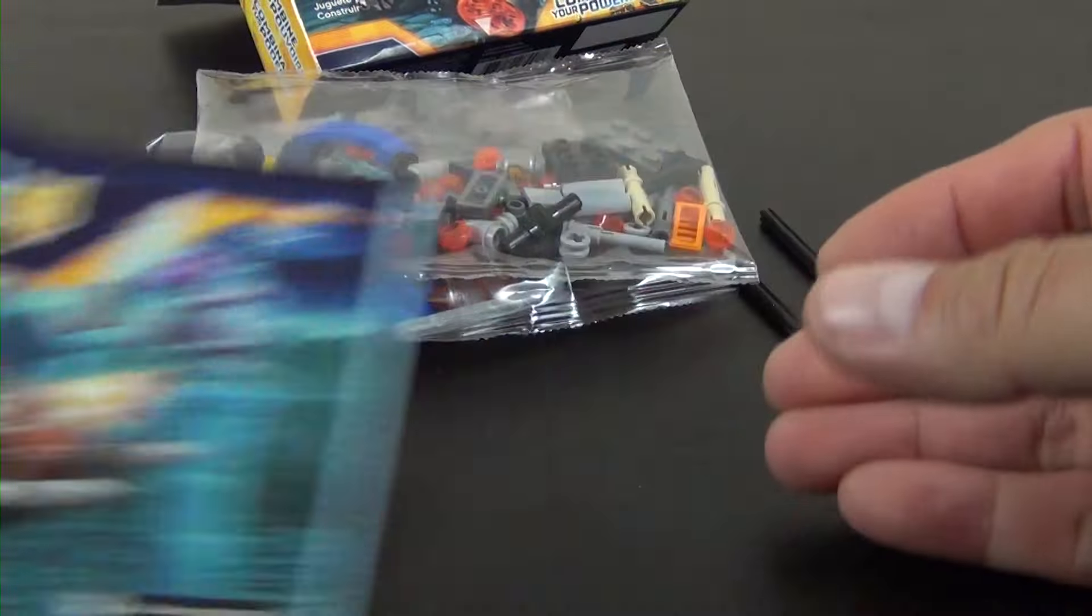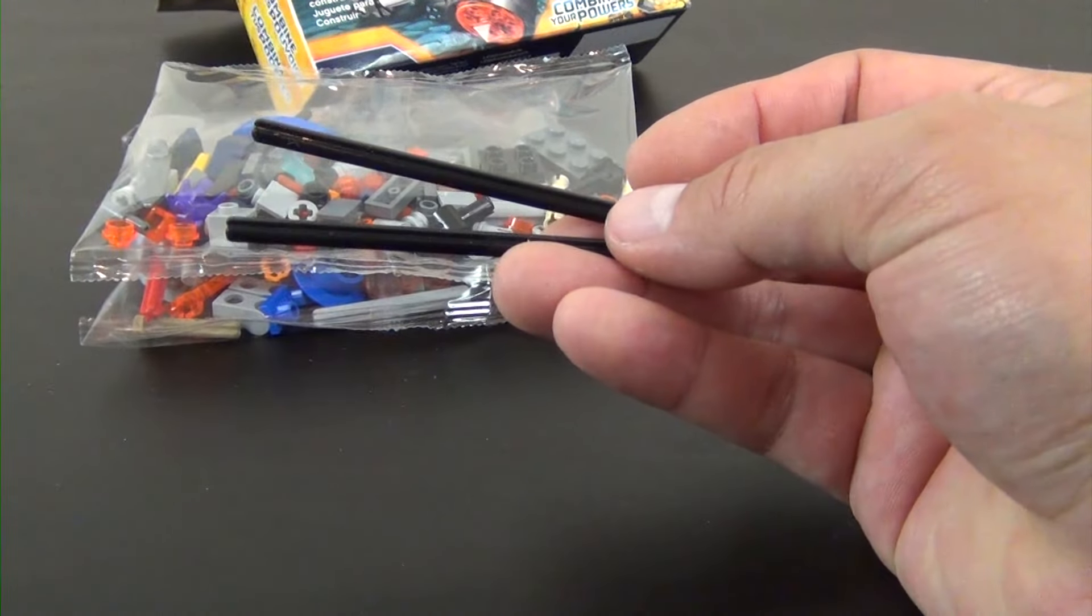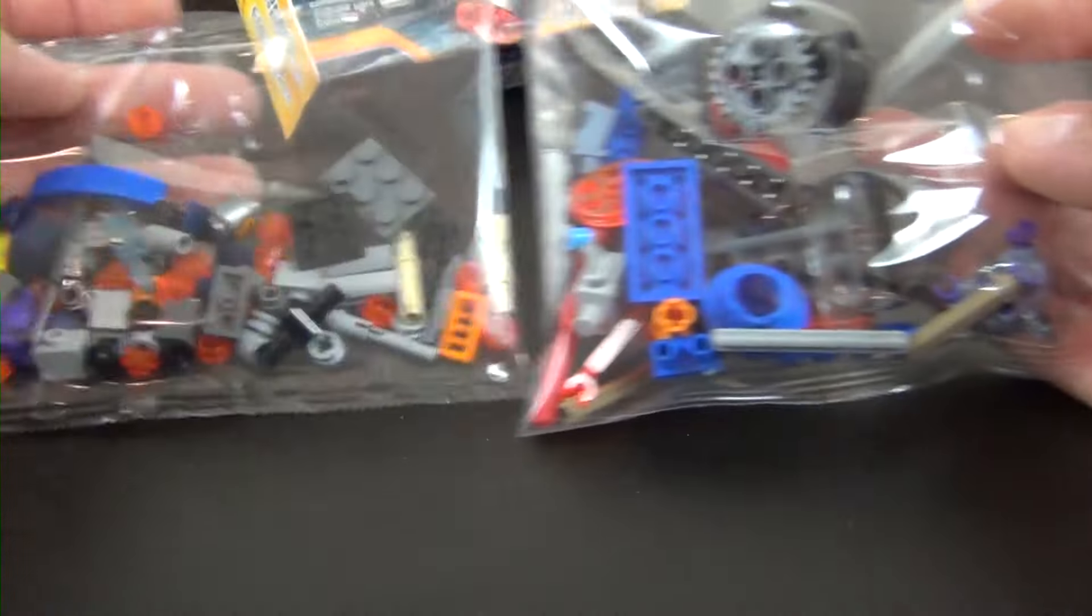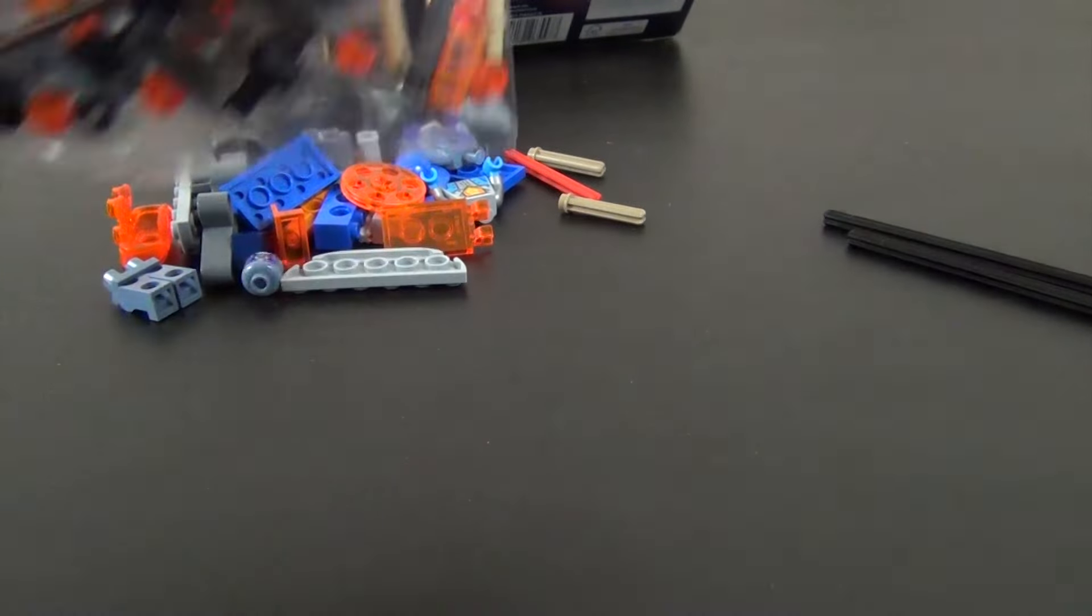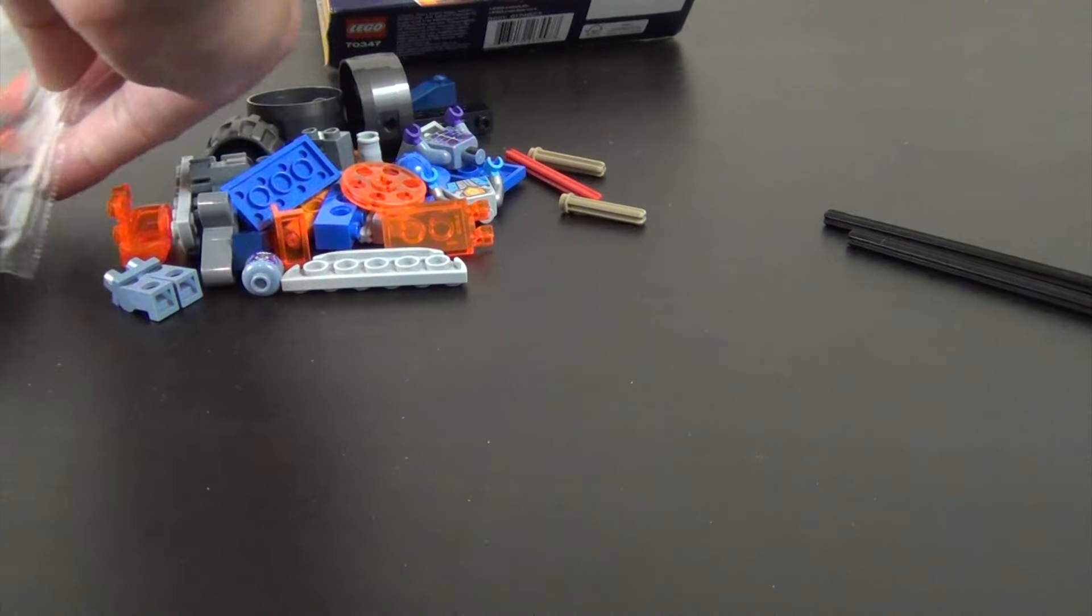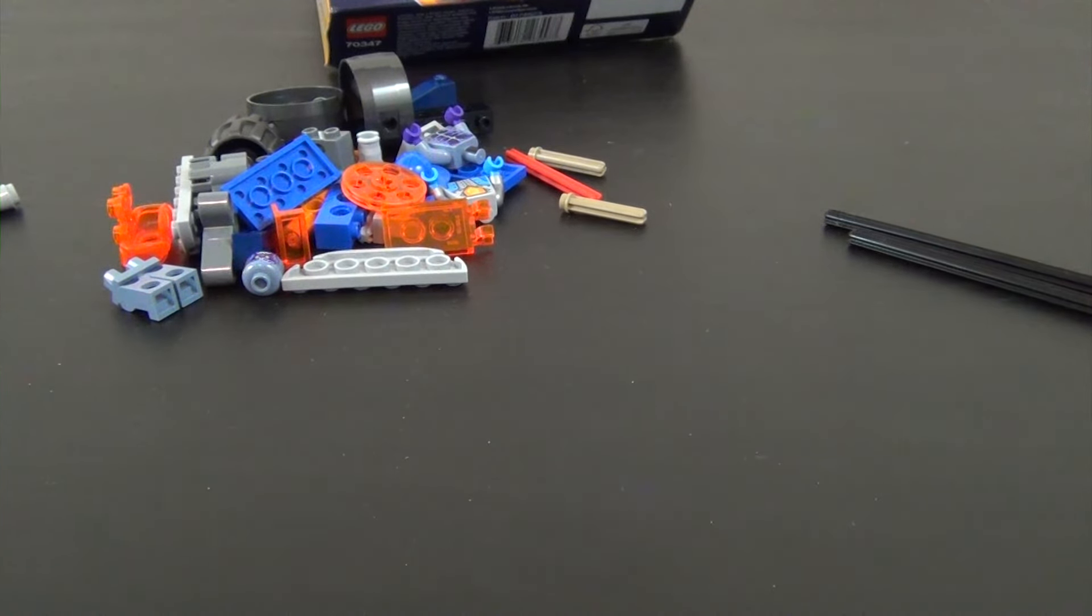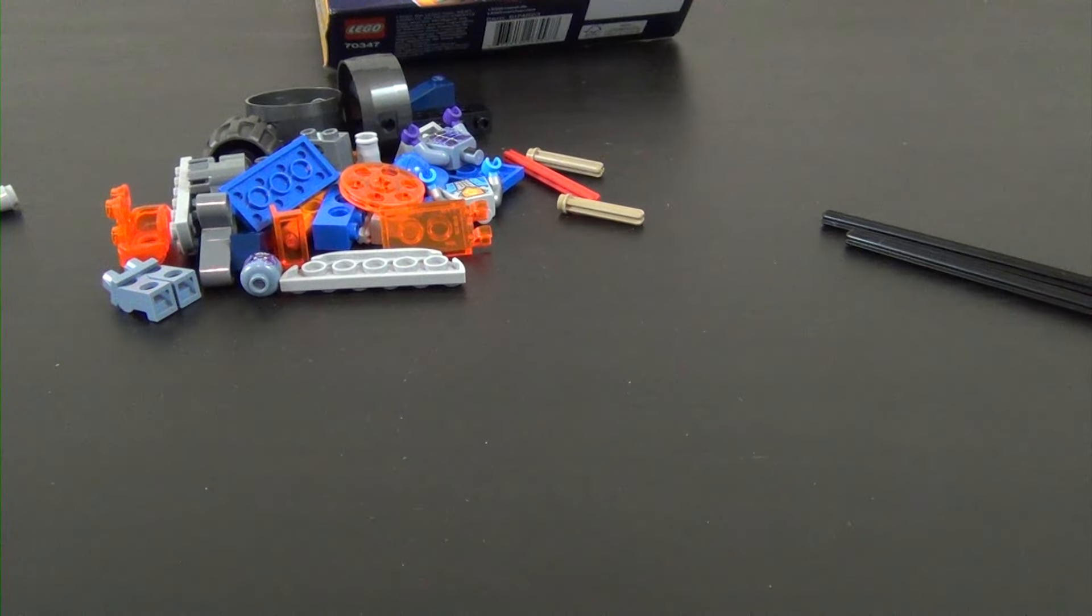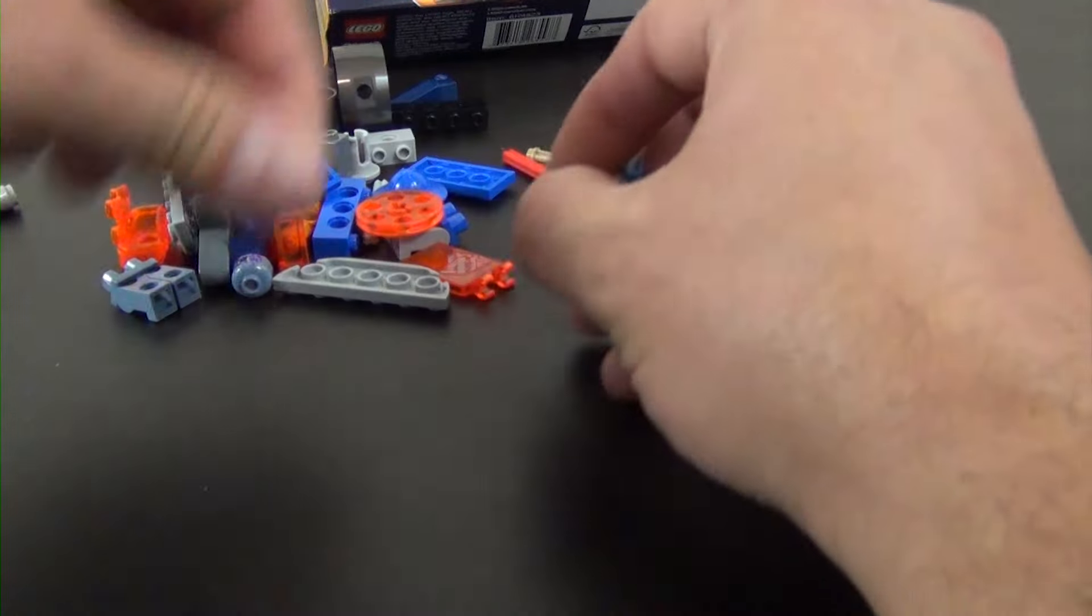All right, we have a small instruction book, we have two technic axles that were just loose in the box, and then we have two bags of parts. Dump those out. One bag has the larger parts and then another one has the smaller parts. Looks like something hit the floor but I think it was a small technic bushing, I can't see it. I guess we'll find out later if I actually needed it.